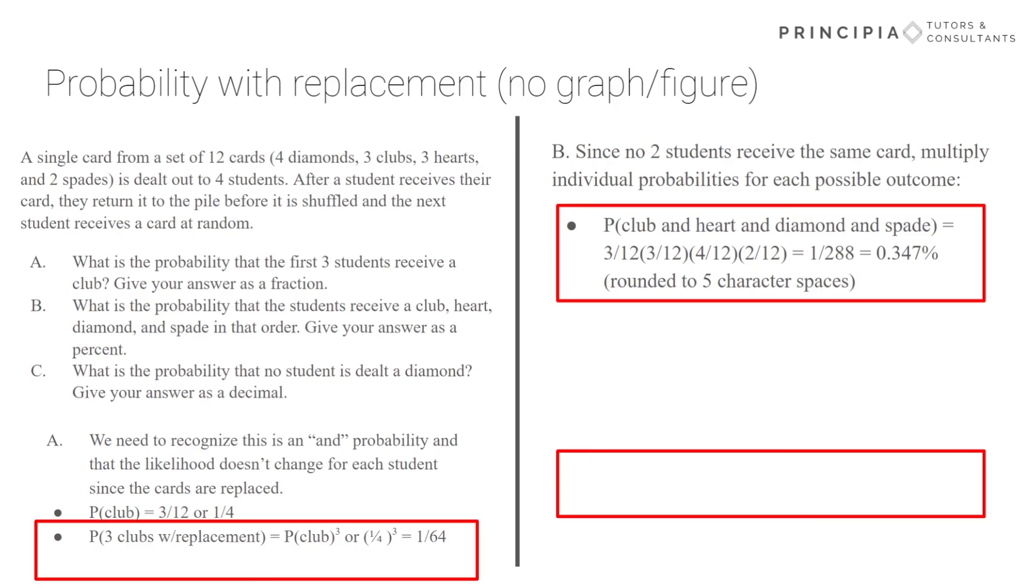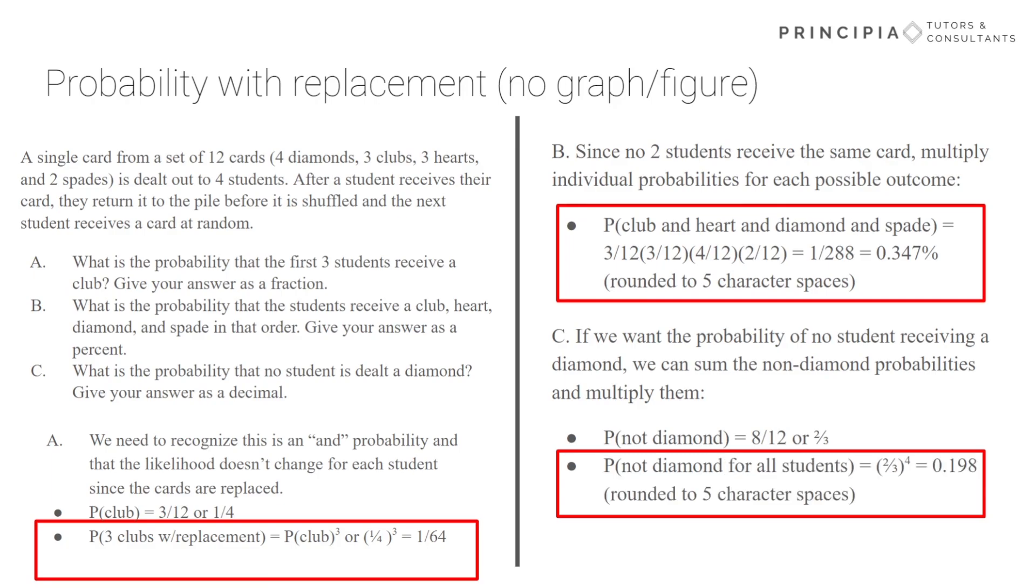Now, the probability that no student is dealt a diamond. Here what we're looking for is the P naught. And so what we can do is we can sum the non-diamond probabilities and then multiply them. And since cards are replaced each time, the non-diamond probability will not change. So if there are only four diamonds, that means eight of the 12 cards are going to be not diamond. And so we're essentially just saying eight over 12 multiplied by itself four times. And so two-thirds to the fourth power gives us a 0.198 probability. And since they're asking for the answer as a decimal, that's how we'd want to list it.